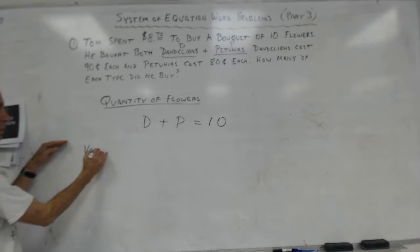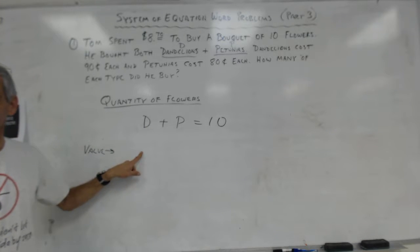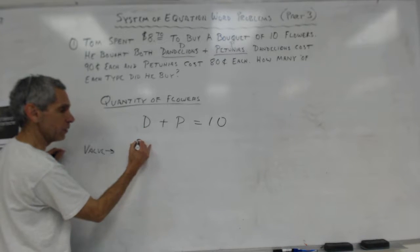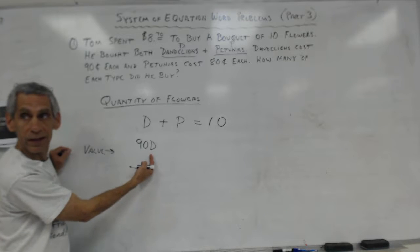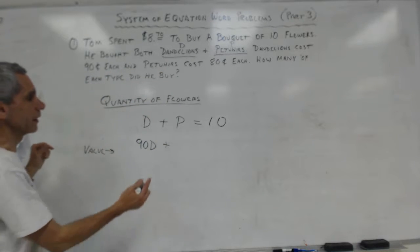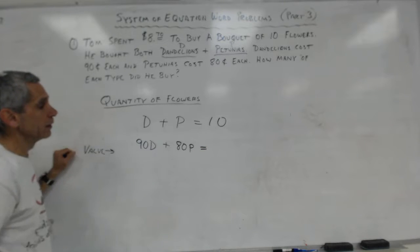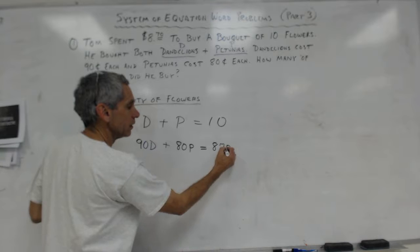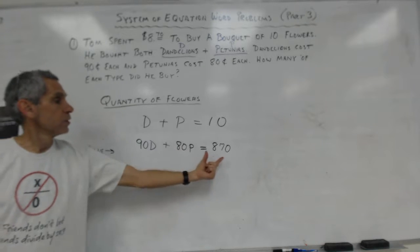Now I have to do a value equation. So I have to put the value of a dandelion in front of the D for my value equation. Dandelions cost ninety cents each, so since dandelions cost ninety cents, I'm going to put ninety in front of my D, because D is just the number of dandelions. Ninety cents times the number of dandelions is going to make the value of dandelions. And then plus petunias cost eighty cents, so my value of my petunias is eighty cents times the number of petunias, eighty P. And notice I'm writing these as cents, not as dollars.